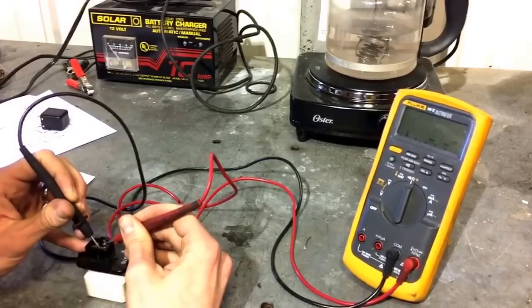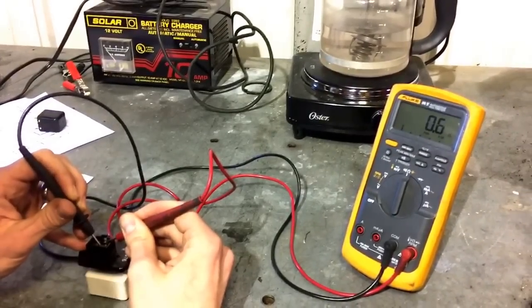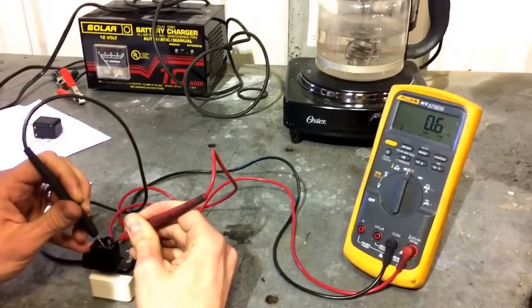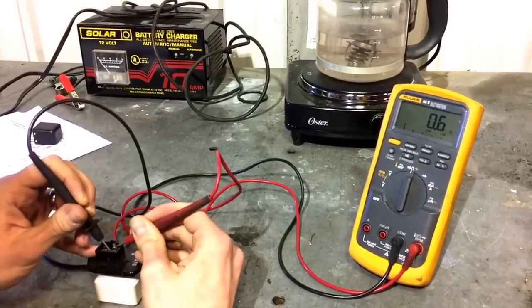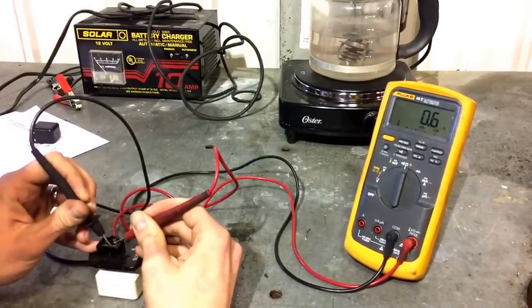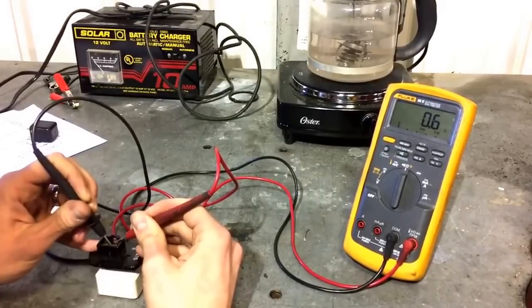We are going to check 1 to 3, which is basically the two terminals next to each other. We've got .6. The spec is 1.2. So we're a little bit low there.